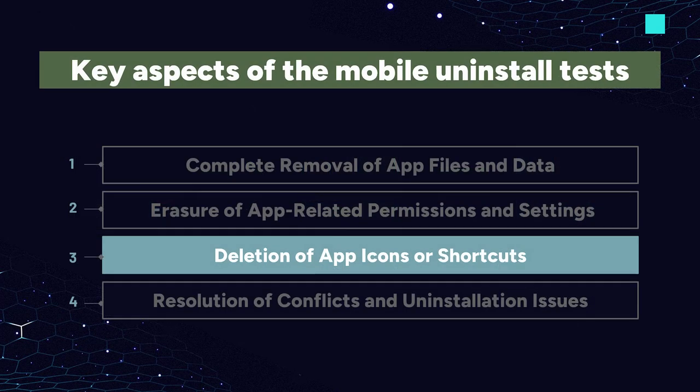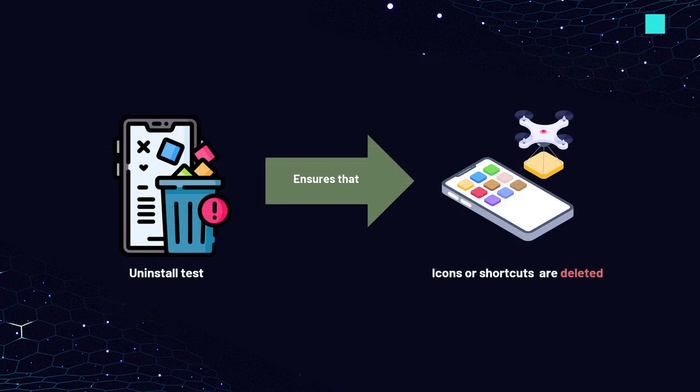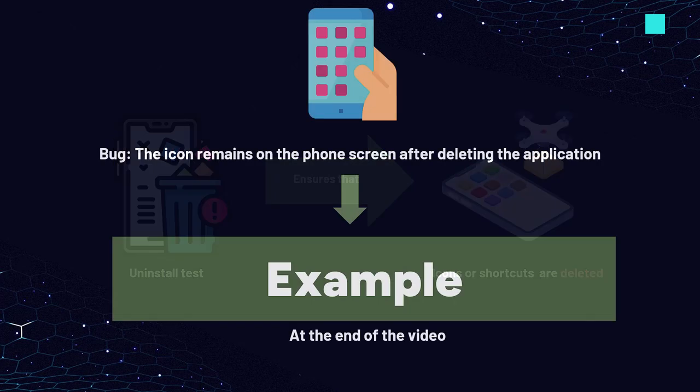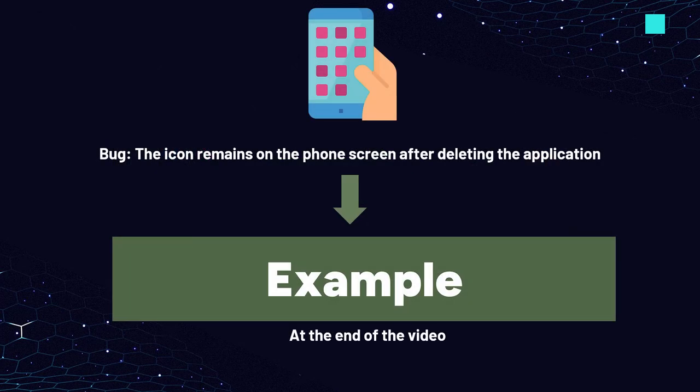The next key aspect tested during mobile uninstall tests is deletion of app icons or shortcuts. The uninstall test ensures that any icons or shortcuts representing the app on the device's home screen or app drawer are deleted, keeping the user interface tidy and free from obsolete references. The issue where the icon remains on the phone screen after deleting the application occurs quite frequently. We'll demonstrate an example of this bug later in this video.